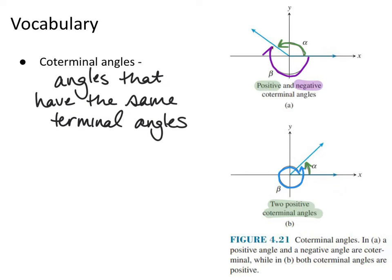Another piece of vocabulary is coterminal angles — angles that have the same terminal ray. One angle alpha may go positive and end at a ray; another angle beta may go the opposite direction and still end at that same ray. Since they both end at the same ray, they're called coterminal angles. We can also find two positive coterminal angles by going a full 360 or 2π and then continuing the same small distance to meet back at the same ray.